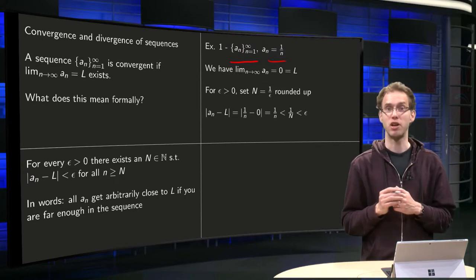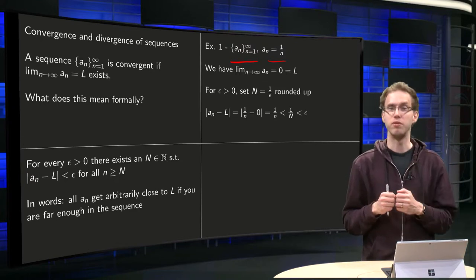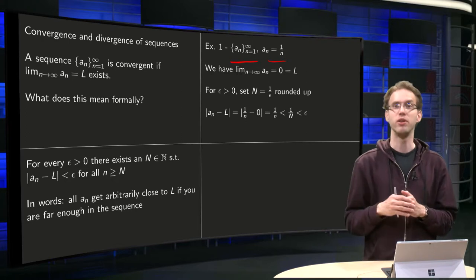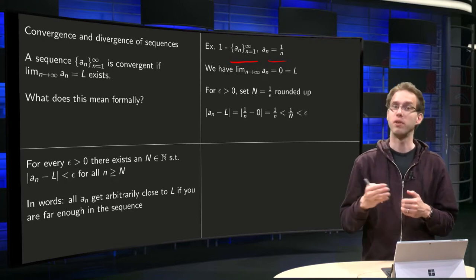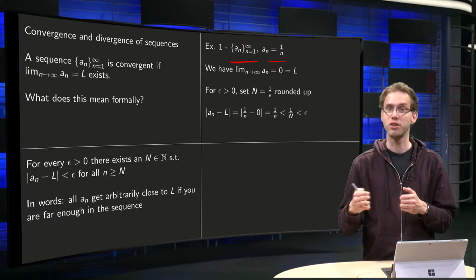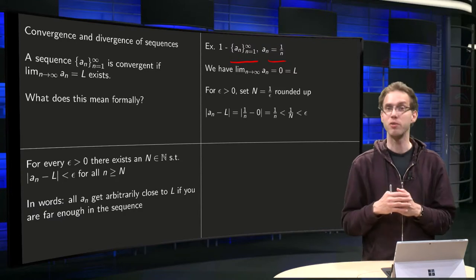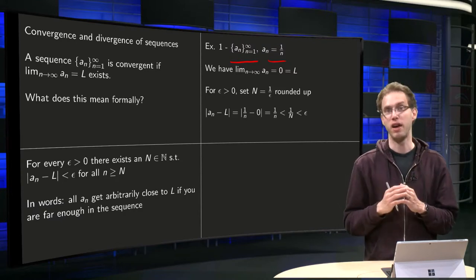So what happens if n gets large? n equals 10, we have 1/10 = 0.1. n equals 100, we have 0.01. n equals 1000, we have 0.001. So you see what's going to happen. If n goes to infinity, our elements become arbitrarily small.